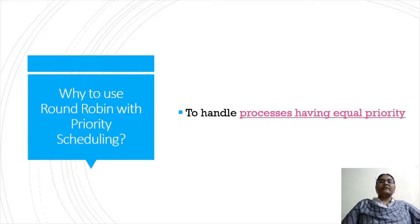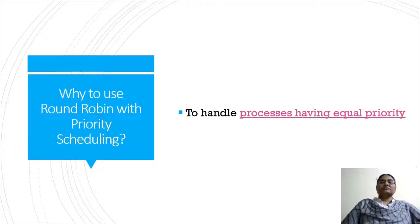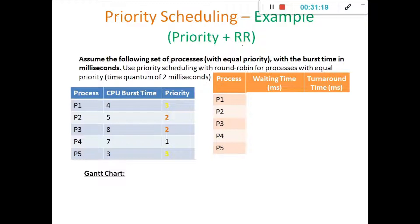Round robin will reduce the waiting time of the process. If we go with first come first serve, only after completing one process will it go to the next process. Instead of that, we can go with round robin scheduling algorithm so that based on a time quantum it will schedule the processes which have the same priority. Instead of FCFS, you can make use of round robin scheduling if the set of processes has equal priority.